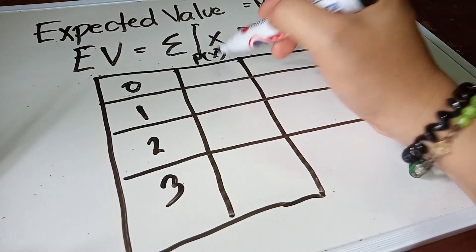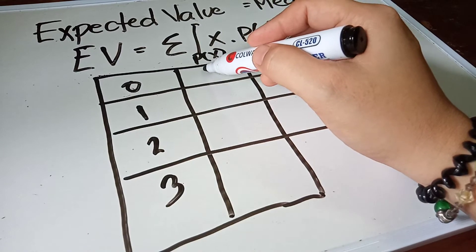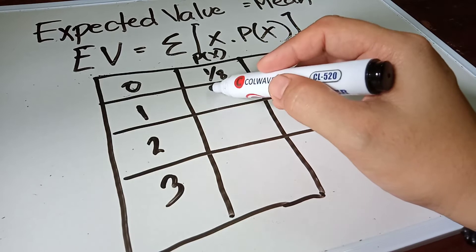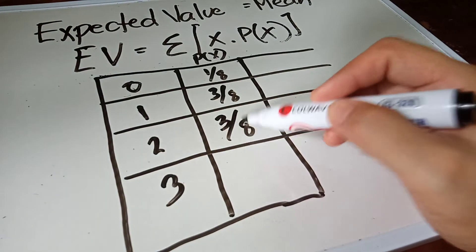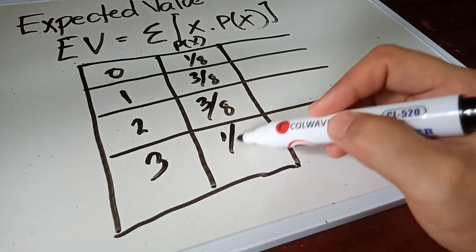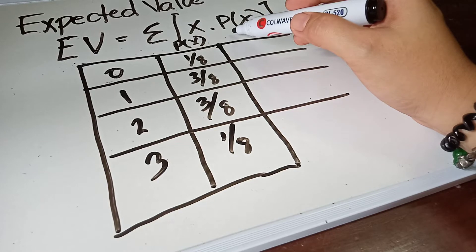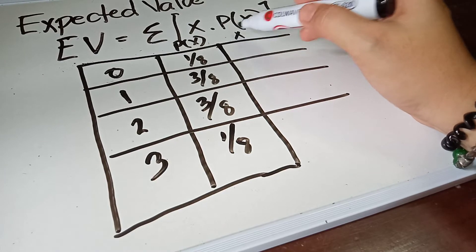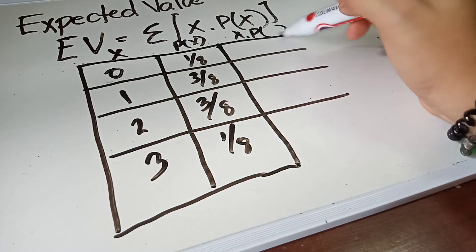For zero we have one over eight, and then three over eight, same as three over eight, and then one over eight. And this is already multiplied by x, which is this, the x multiplied by P of x.